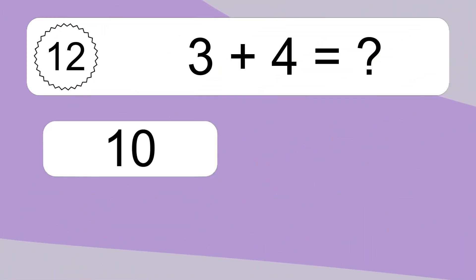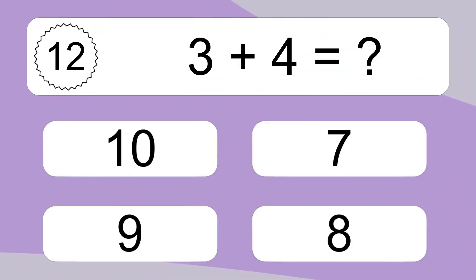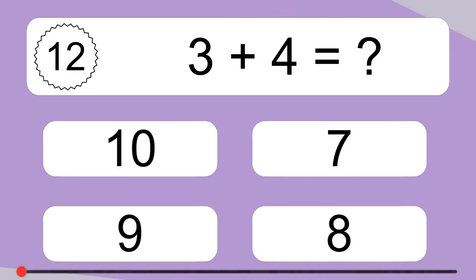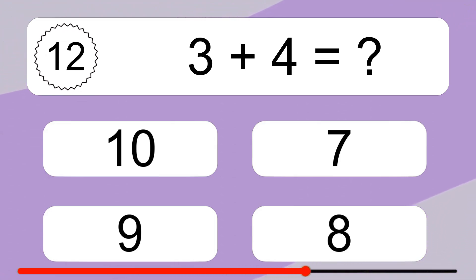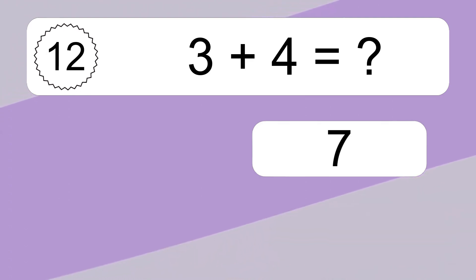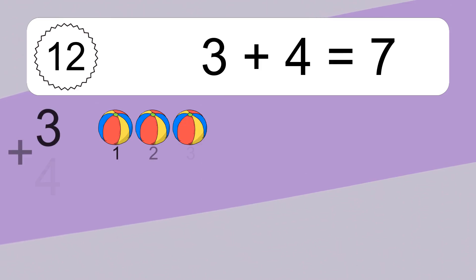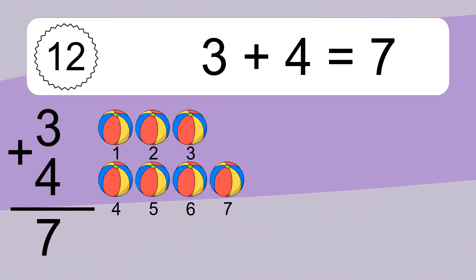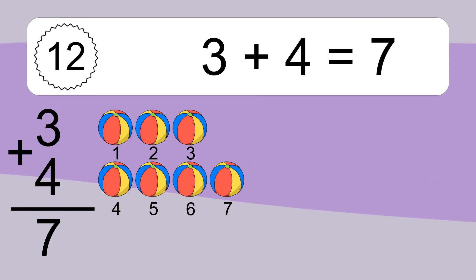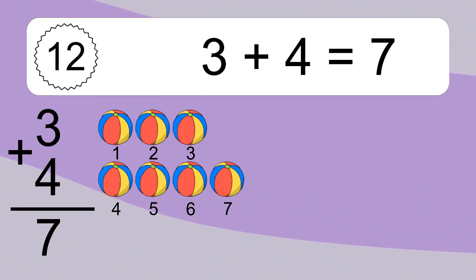3 plus 4 equals what? 3 plus 4 equals 7. Let's count it: 1, 2, 3, 4, 5, 6, 7.